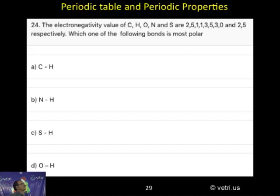That is, the values are 2.5, 1.1, 3.5, 3.0, and 2.5 respectively. Please do the correction - it is 2.5, 1.1, 3.5, 3.0, and 2.5 respectively. Which one of the following bonds is most polar?